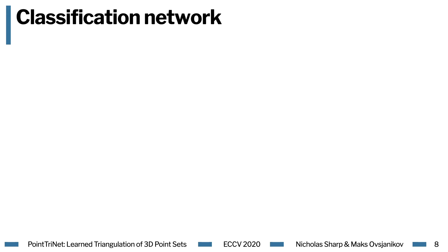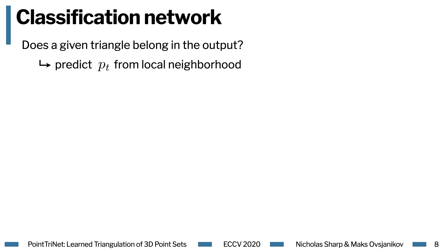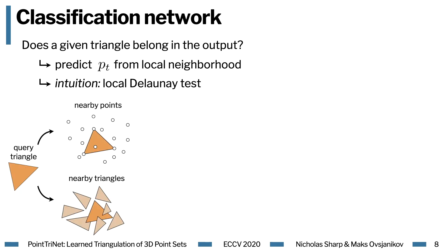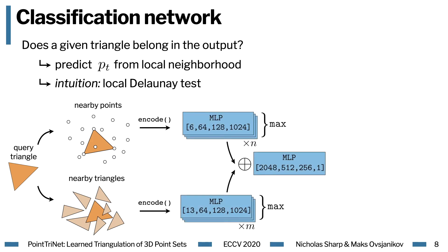The main component of PointTriNet is the classification network. It classifies whether a given triangle should appear in the mesh, as a function of the local neighborhood. Our intuition is that although triangulation is a global problem, it's driven largely by local concerns. For instance, in classical Delaunay triangulation, the empty circumcircle test is sufficient to select a triangle. More precisely, our classification network is structured as follows: given a query triangle, we gather some nearby points and nearby triangles, and encode these as input to a PointNet, which then learns to generate the prediction score as a value from 0 to 1.